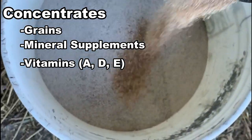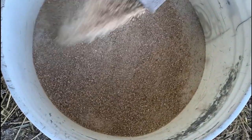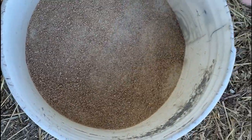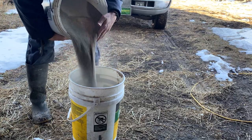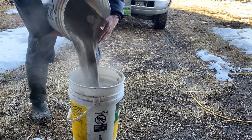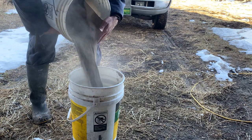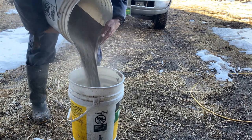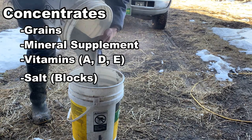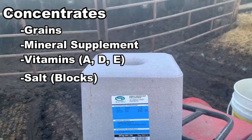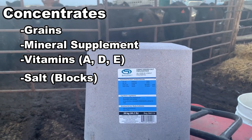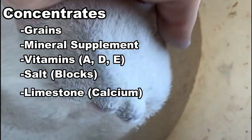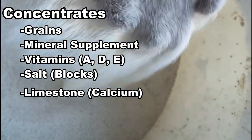We also supplement our minerals with vitamins A, D, and E. Cattle can synthesize their own B and C vitamins, but supplementing their rations with ADE is a good idea to ensure growth and reproductive efficiency. We feed our mineral loosely and offer it free choice to all our cattle, sometimes with a salt block during hot summer months. With our corn silage rations, it's often necessary to provide extra calcium, and we do this by adding limestone straight into our mixer wagon.